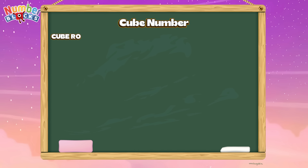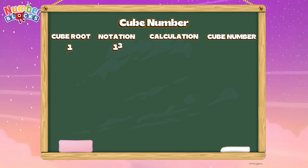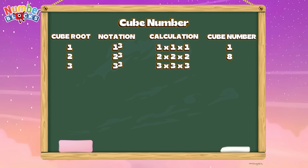Here is the cube root — the notation, the calculation, and the cube number. Let's start with 1: the notation is 1 cube, the calculation is 1 times 1 times 1, and the cube number is 1. Let's try 2: 2 cube, or 2 times 2 times 2, equals 8. Next, 3: 3 cube, or 3 times 3 times 3, equals 27. Next is 4: 4 cube, or 4 times 4 times 4, equals 64.